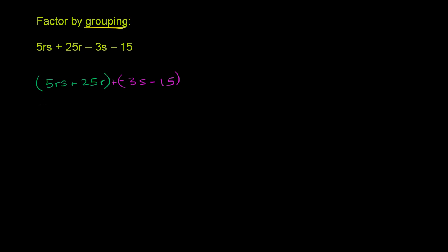When we do that, it becomes easier to factor things out. Both terms in the first group are divisible by 5 and by r, but not both by s, so all we can factor out is 5r. The greatest common factor of 5rs and 25r is just 5r. So it's 5r times — factoring 5r out of 5rs leaves s, and factoring 5r out of 25r leaves 5, since 25 divided by 5 is 5 and r divided by r is 1.